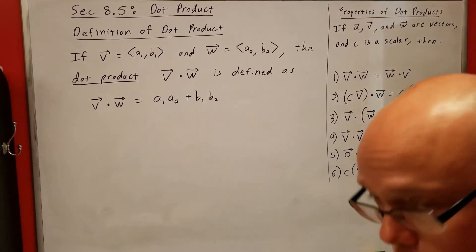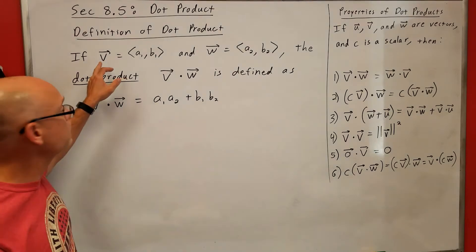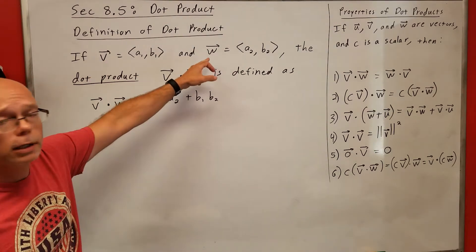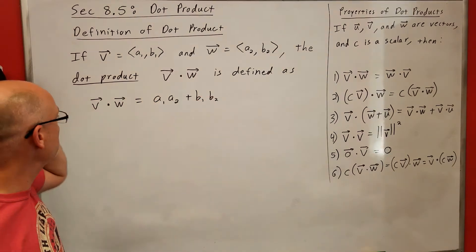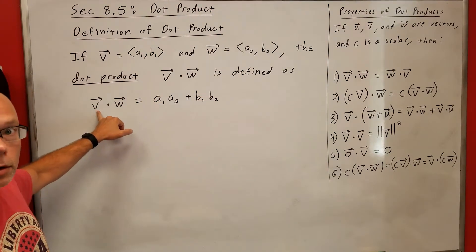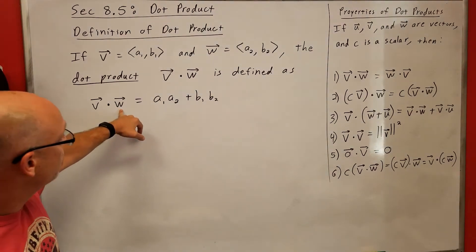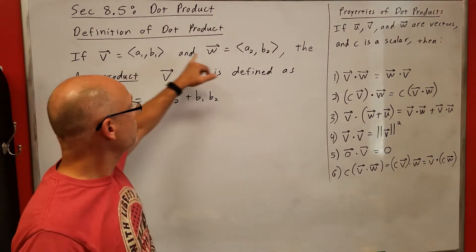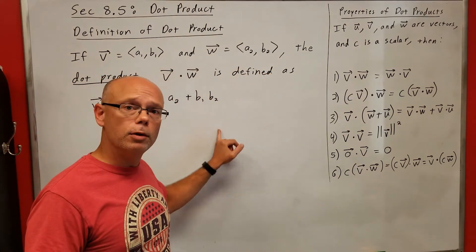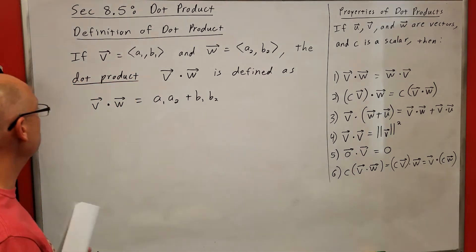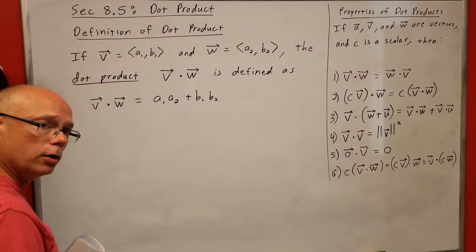Section 8.5, dot product. Here's the definition of dot product. Let's suppose we have vector V and vector W, giving them components A1, B1 and A2, B2. To find a dot product, which looks like V dot W, we take the first components and multiply, then add to that the second components multiplied. And what this produces is a scalar — basically a number, not a vector.